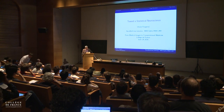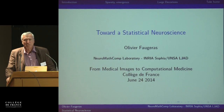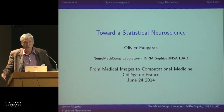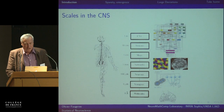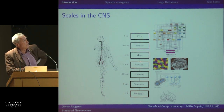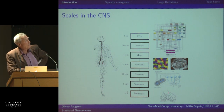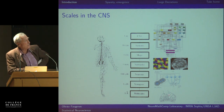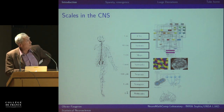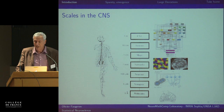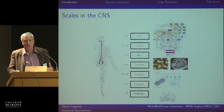Thank you very much for this kind introduction. My talk today will be about statistical neuroscience, a new area I'm trying to develop with many colleagues. As an introduction, I'll show this diagram displaying the different spatial scales. There are lots of different spatial scales in the central neural system, going from molecules at the synaptic level to individual neurons and assemblies of neurons — from the angstrom to the meter. The same could be said for temporal scales.